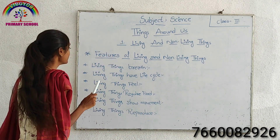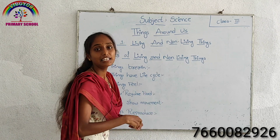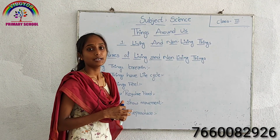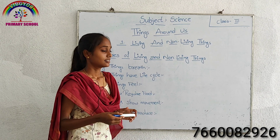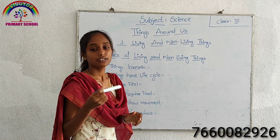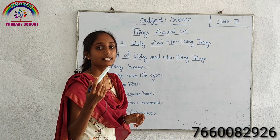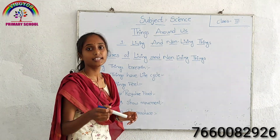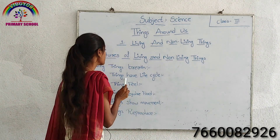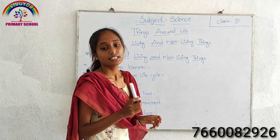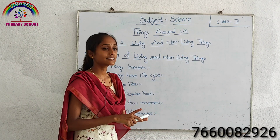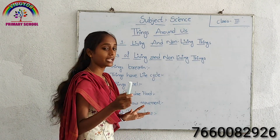Next, living things have a life cycle. Living things show growth during their life cycle. First a baby grows into a girl, a girl grows into a young woman, and then into old age. Non-living things like pencils and erasers do not show any growth.